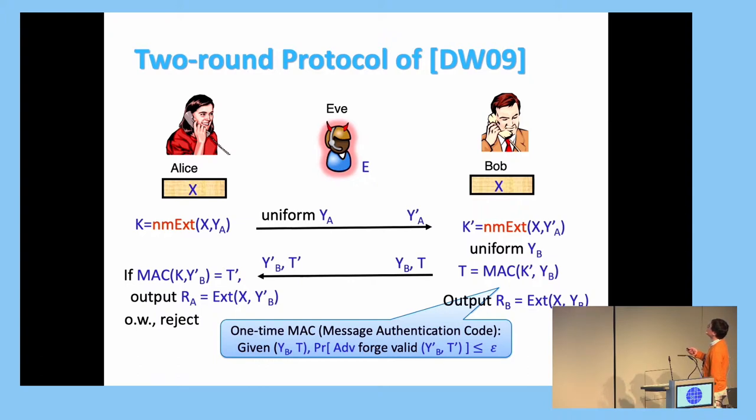Then Bob samples another random seed Y_B and uses the MAC message authentication code. Use this K' as the key to the MAC and passes Y_B and the tag back. Then Eve might change Y_B and T to another Y'_B and T'. Then Alice just checks whether the MAC matches. And if it doesn't match, then she rejects. Otherwise, both of them use another strong extractor to extract X with Y'_A and Y'_B.